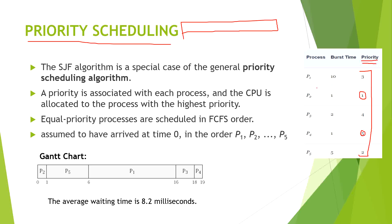Let's start the execution. At t equal to zero, all processes are arriving, so there should be no confusion about arrival time. After that it checks which process has the greatest priority — process two is having the greatest priority, so process two will be allocated.